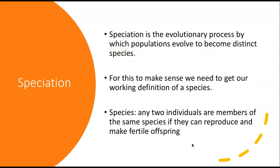Speciation, by definition, is the evolutionary process by which populations evolve to become distinct species. So what is a species? In order for that definition to make sense, we need a working definition. For this class, a species is defined such that any two individuals can be members of the same species if they can reproduce and make fertile offspring.